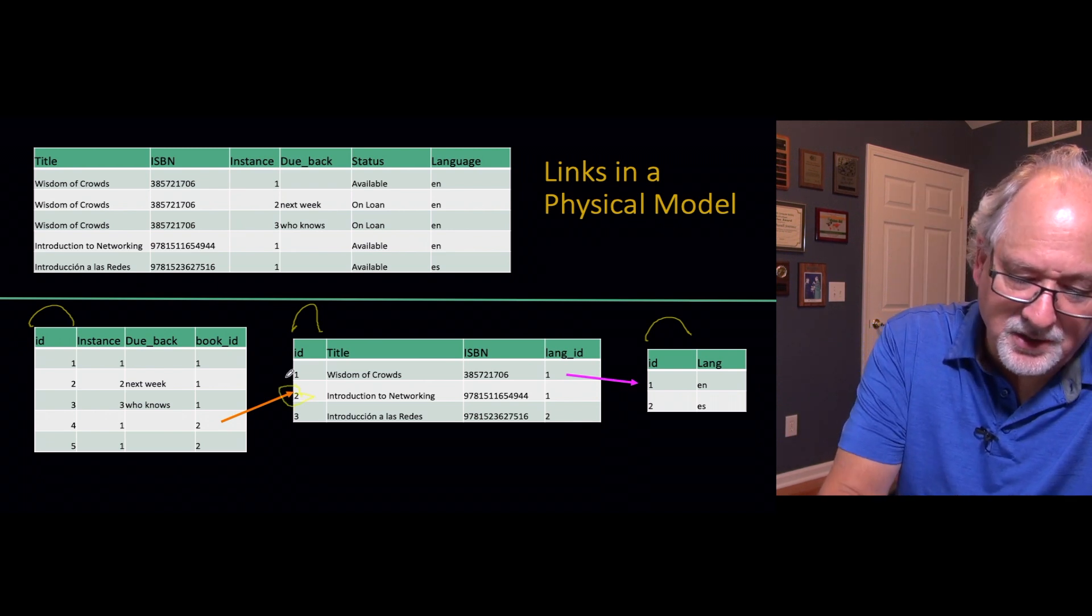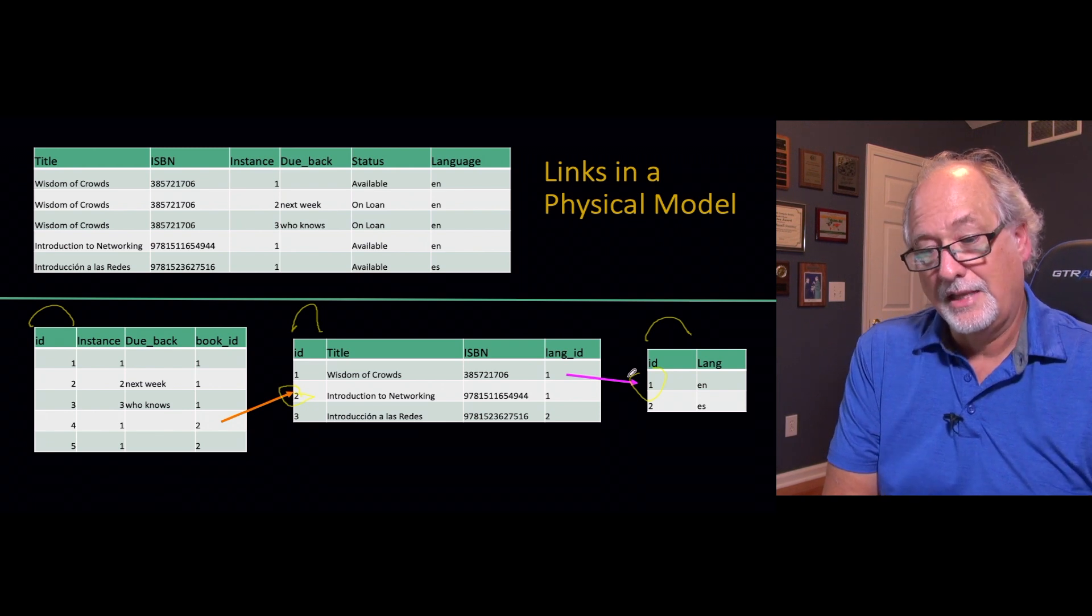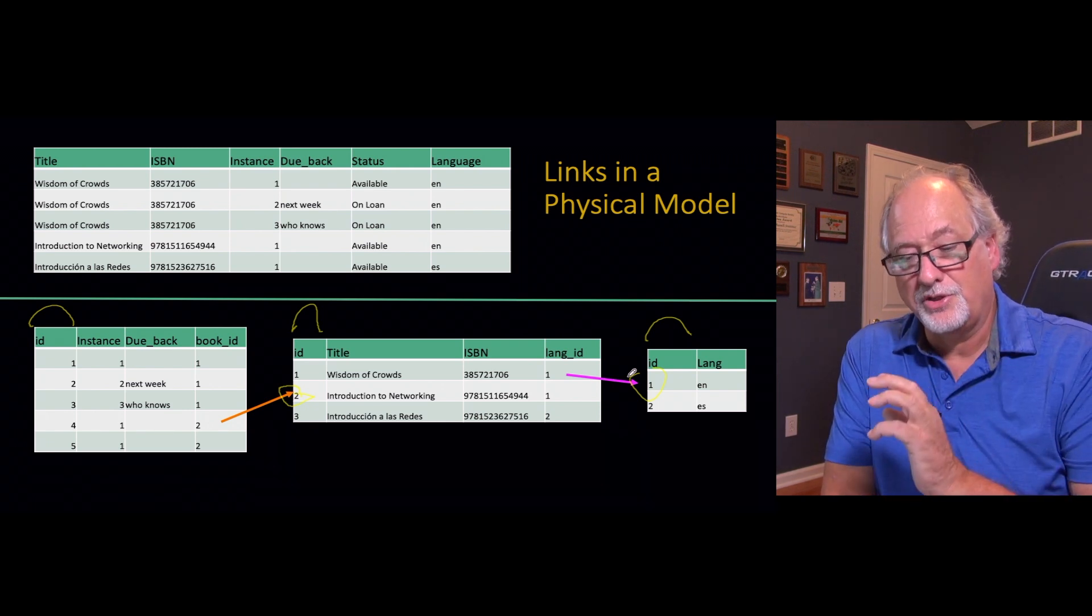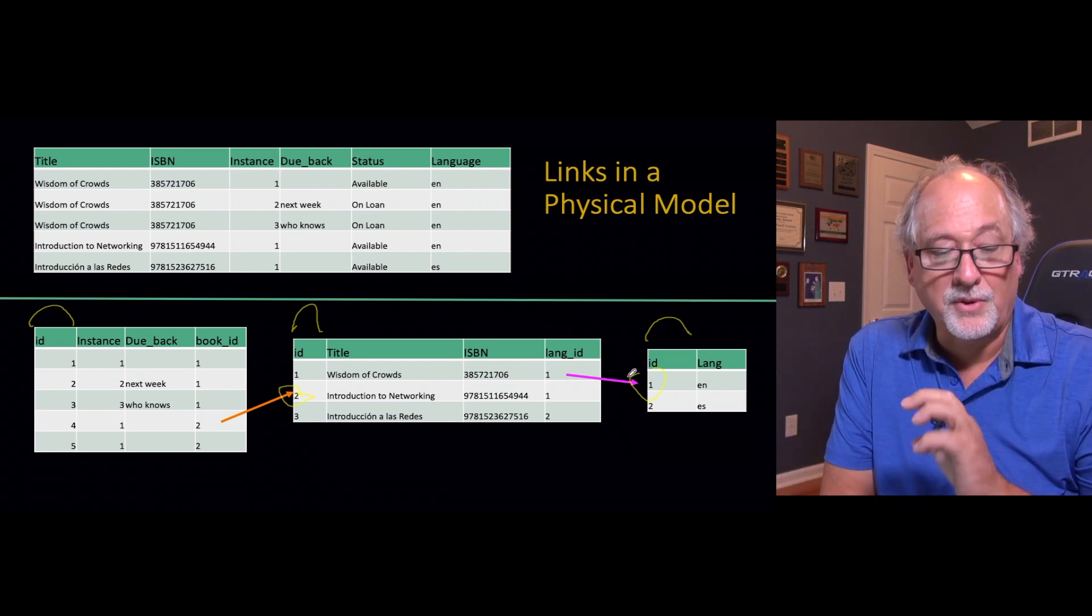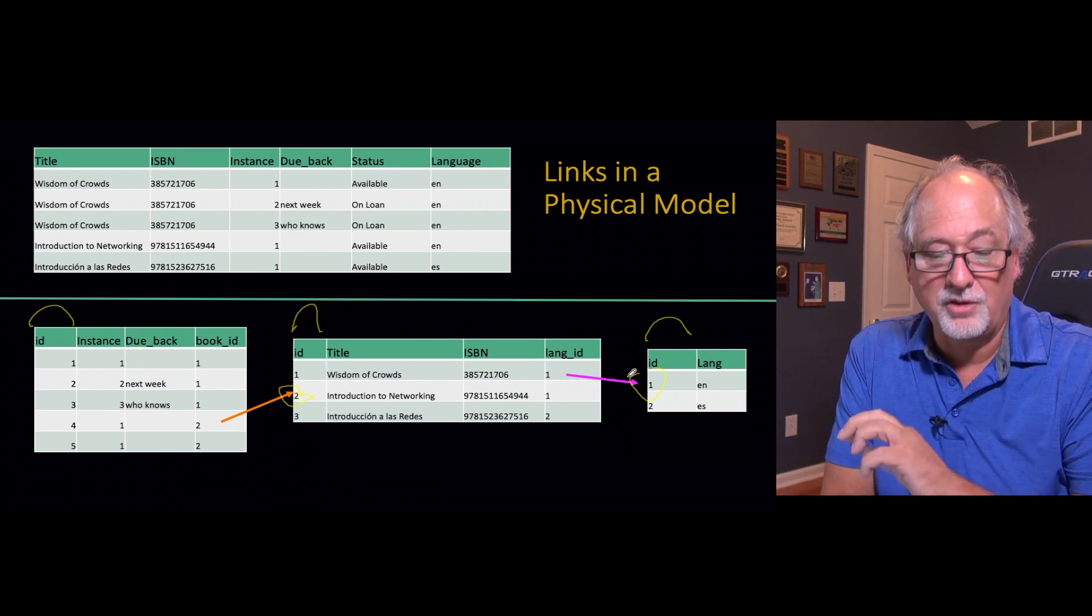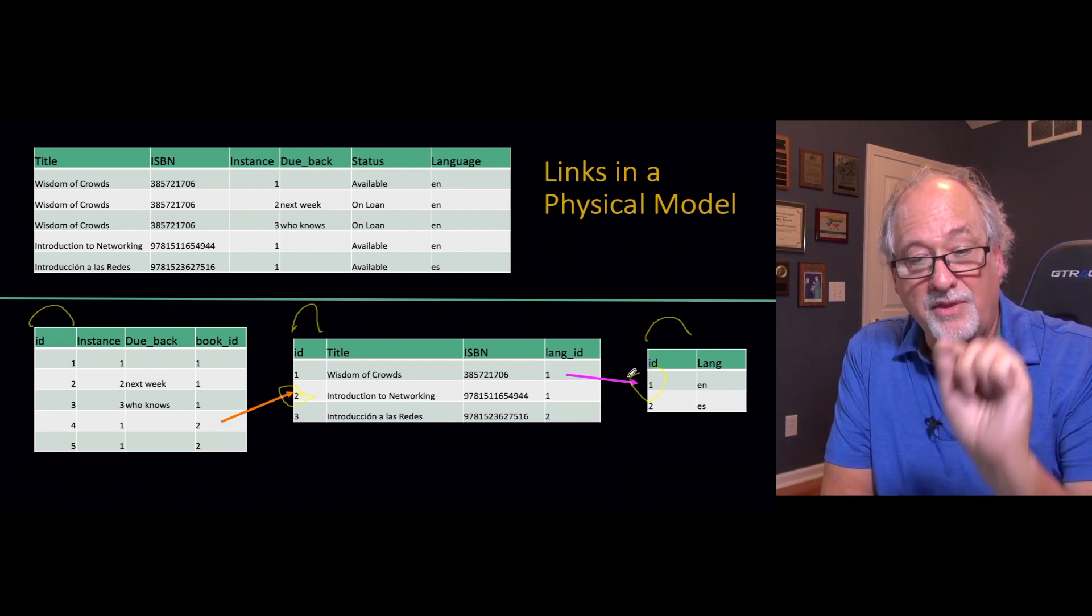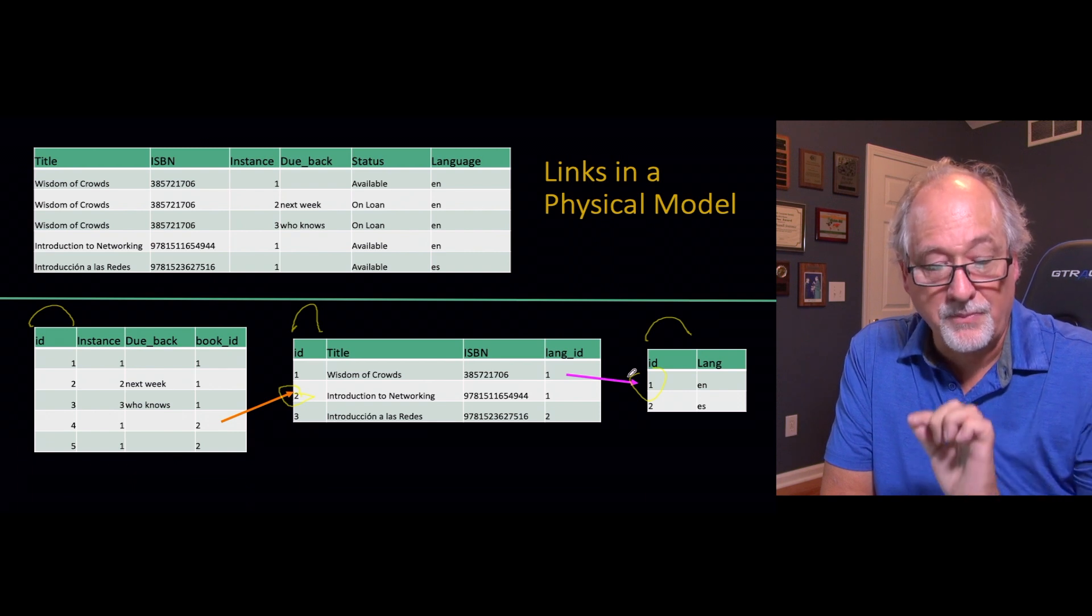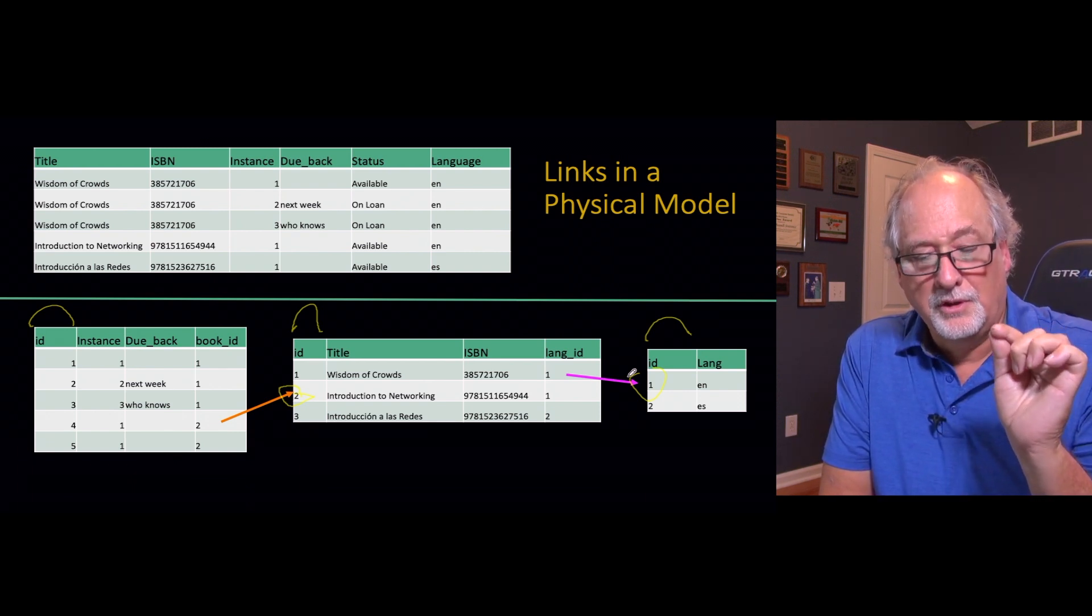The primary keys are like the destination endpoint of the arrows. That's how we say English becomes language number one, Wisdom of Crowds is book number one, and Introduction to Networking is book number two. The ID is something we can use throughout the rest of the system. Integer replication is not a problem.